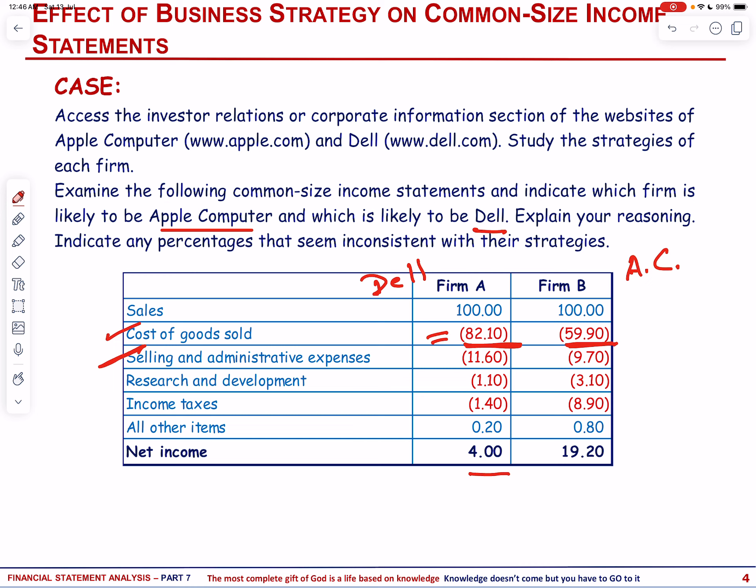Dell operates in a more competitive market where price sensitivity is higher. As a result, Dell may engage in more aggressive marketing and promotional activities to drive sales and maintain market share, which can increase its selling and administrative expenses relative to its revenue. Dell's products, particularly in the PC and server segments, are often viewed as commodities with lower profit margins per unit. This can lead Dell to allocate more resources towards marketing efforts to differentiate itself from competitors and attract price-sensitive customers.